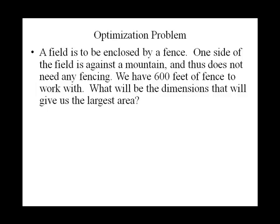We're going to take a look at an optimization problem. In this optimization problem we're going to be enclosing a field by a fence. One side of the field is against a mountain and thus does not need any fencing. We have 600 feet of total fence to work with, so we want to find the dimensions that will give us the largest possible area.